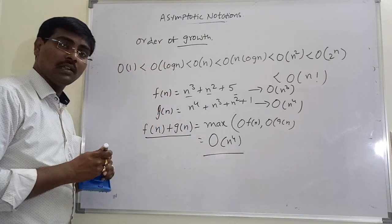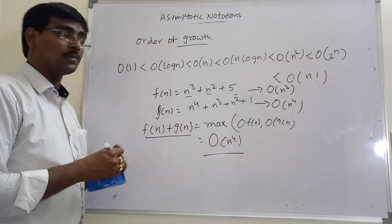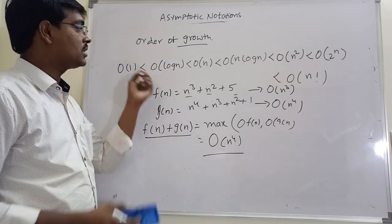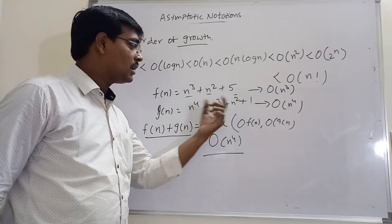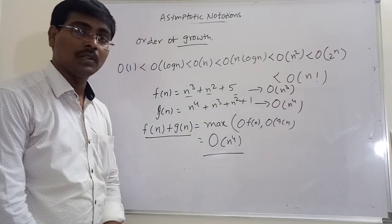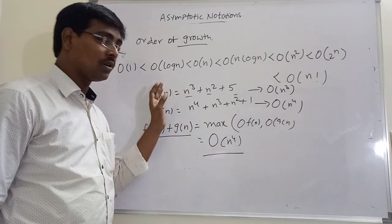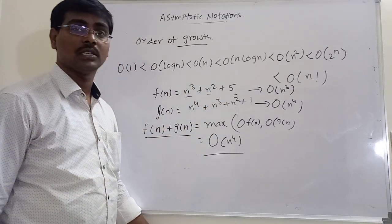These are the different asymptotic notations, and the order in which the time complexities, that is the notations, are considered. Thank you.